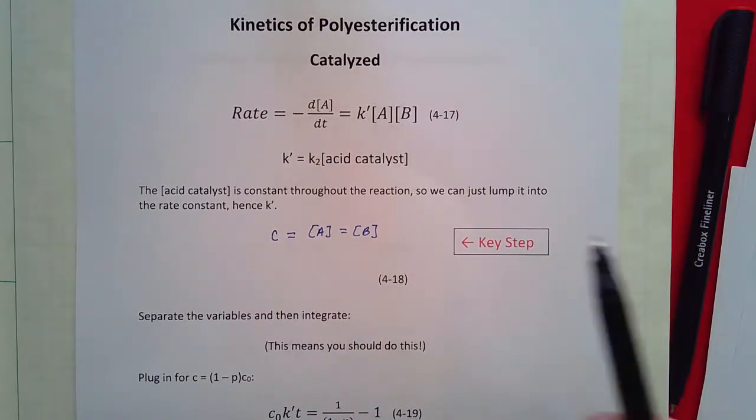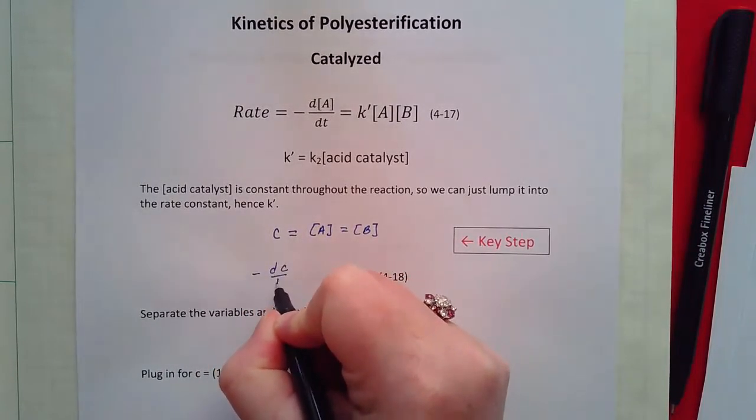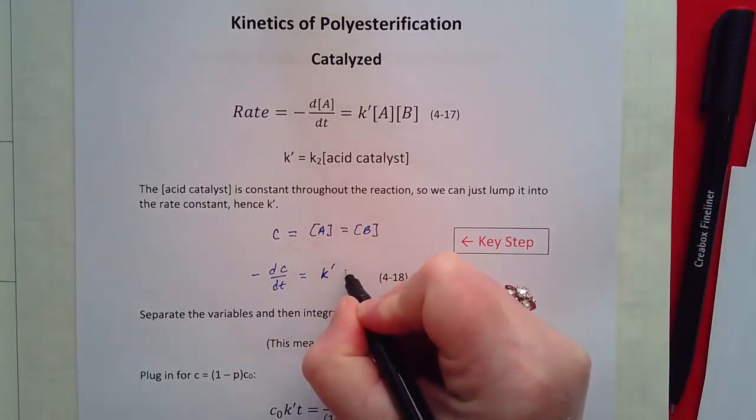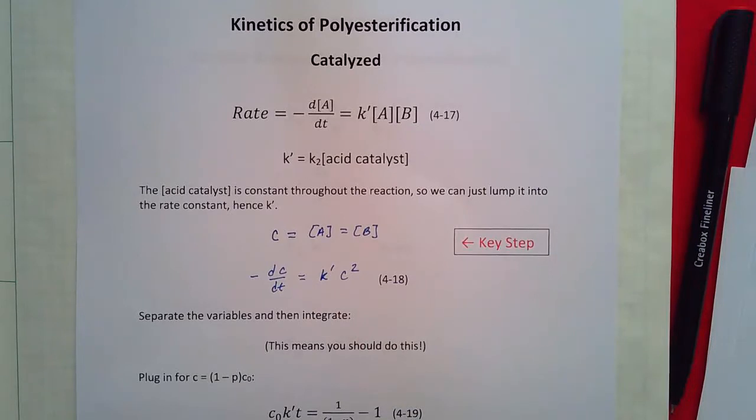That simplifies this equation down to minus dc/dt equals the rate constant times c squared. And that's an equation we can readily solve.